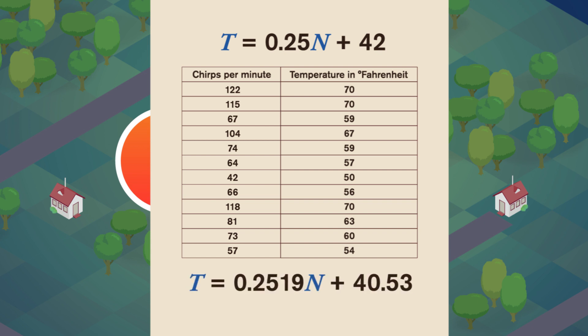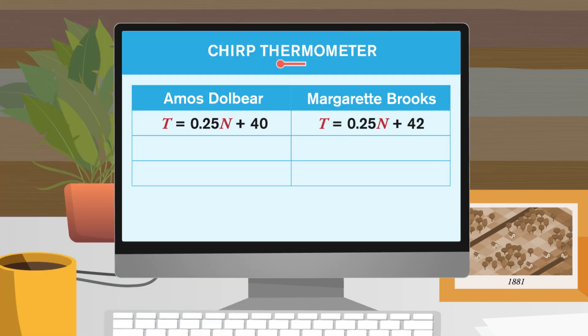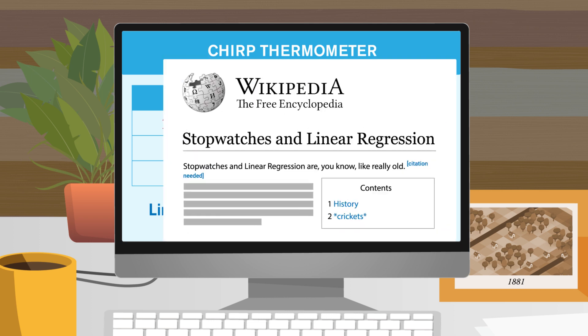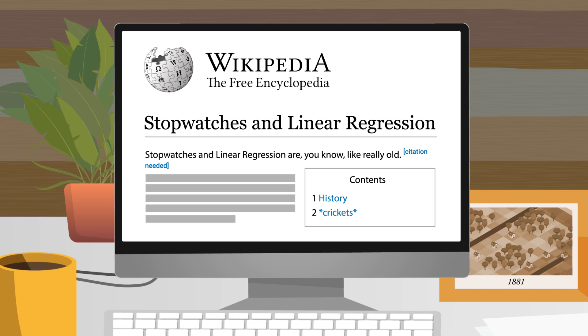Now we can find the line of best fit for this data with our least squares method. It gives t = 0.2519n + 40.53. We can do that by hand now that we know how it all works, but it's actually much easier and faster to use a simple computer program. If we put in a sample input of 100 chirps per minute, Dahlberg's method says it's 65 degrees Fahrenheit, the formula Brooks was testing says it's 67 degrees, and the line of best fit gives us approximately 66 degrees — pretty impressive all round, especially since stopwatches and linear regression had only recently arrived in the 19th century.